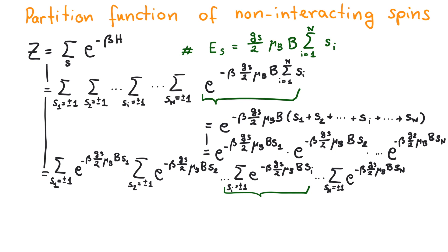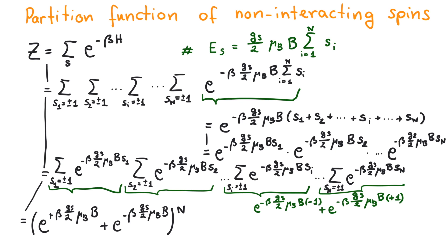We now rearrange the sums with the corresponding Boltzmann factor. One factor can be written by a simple sum of two exponential functions. As this is true for all parts, we obtain a product of n identical terms that can be combined in one simple expression. This is usually written in terms of the hyperbolic cosine.